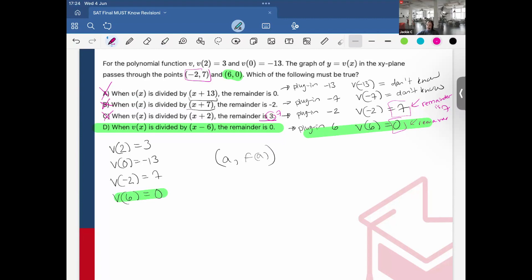aka the y value or the output. So the y value is the remainder, but it's only when we're dividing by a binomial like x minus a. But all of these cases were being divided by a binomial x minus a.